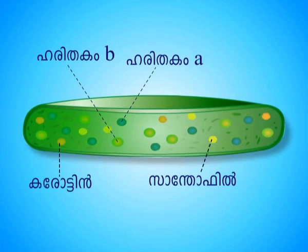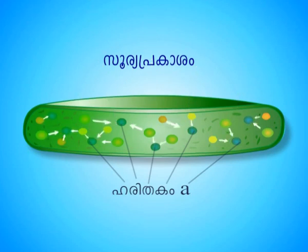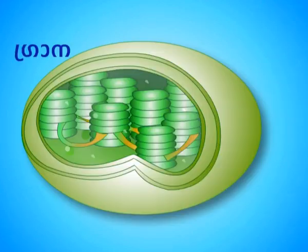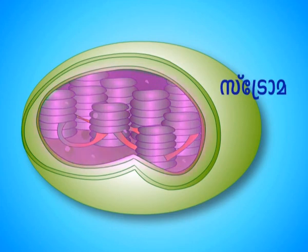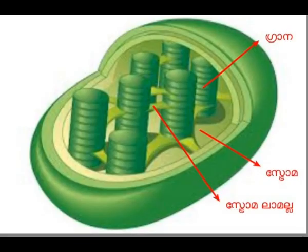All these pigments can absorb sunlight; however, only chlorophyll A can participate directly in photosynthesis. All other pigments absorb light and transfer it to chlorophyll A — hence, they are called accessory pigments. The first stage of photosynthesis is the light phase, which is based in the grana. The second phase is known as the dark phase, which is based in the stroma.